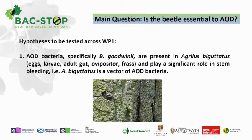One of the main hypotheses associated with AOD, and what we want to achieve with work package one, is trying to understand this relationship between the bacteria and the beetle. My part of the work is going to look at where these bacteria are associated with the beetle — where they actually occur, and do they occur across all the life stages: eggs, larvae, the adult gut, ovipositor, and even the frass from the beetles. Ultimately, we want to see if the beetle actually vectors the bacteria itself. You can see the head of the beetle popping out as it emerges from the bark of an oak tree.